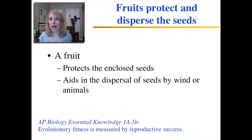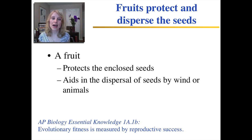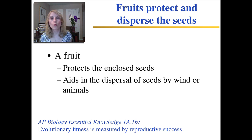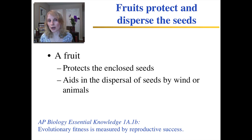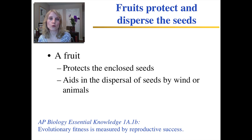The mother plant is essentially sending her babies out into the world. If the seeds fell in the same place as the mother plant and started growing there, the mom would be competing with her children for all the resources in that environment. So it's evolutionarily beneficial for the plant to produce a structure that disperses the seeds elsewhere, so its offspring are not directly competing with the mother plant.